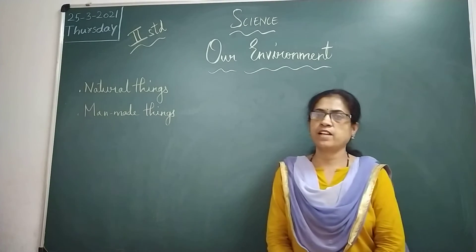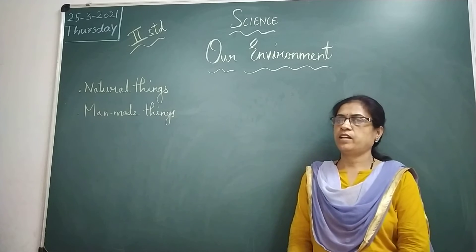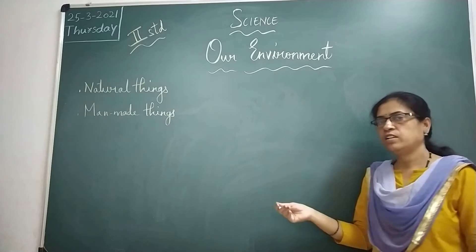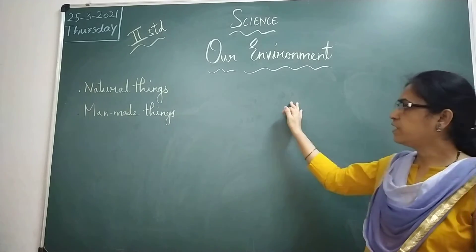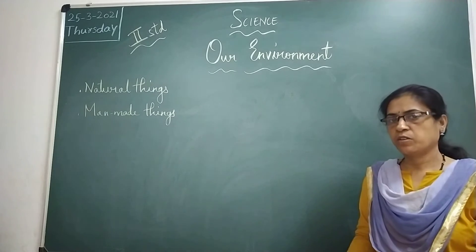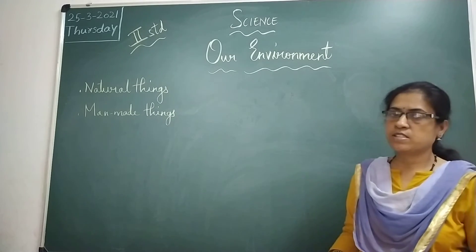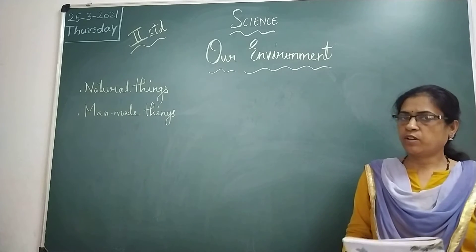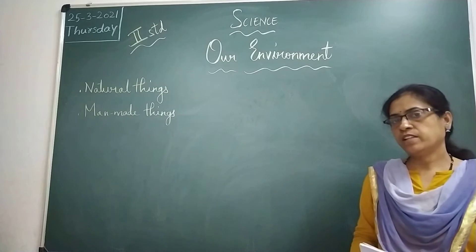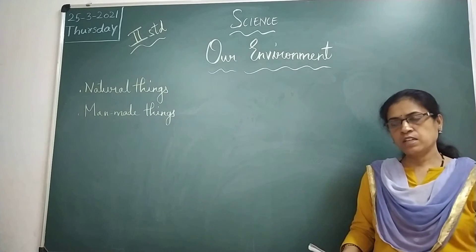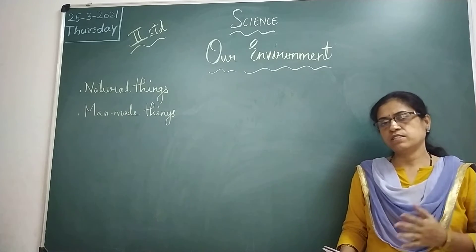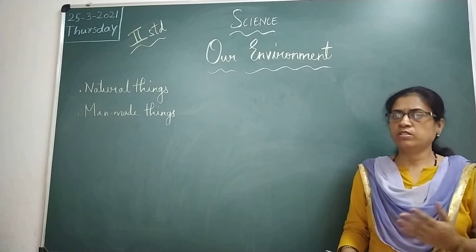Hello children, welcome to science class for 2nd science. The topic is about environment. I have done half of this lesson already — that is our environment, natural things, and manmade things. Let me continue today, but before that let me revise what I have done. So children, what is environment? Environment is about surroundings. We see many things around us, and these things can be natural and manmade. All these things together make our surroundings.